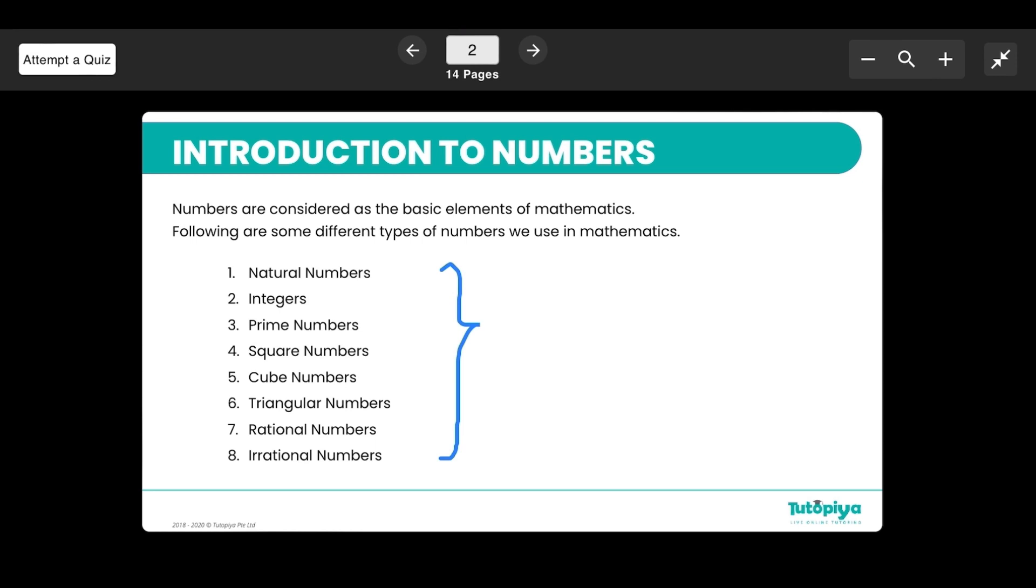Well actually numbers are numbers yes, but we have different groups of numbers like natural, integers, primes, squares. So those are what we are going to look at today in detail.